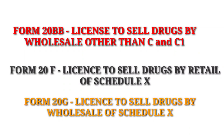Form 20G is used to issue a license to sell drugs by wholesale of Schedule X. So, Form 20F is for retail of Schedule X drugs, and Form 20G is for wholesale of Schedule X drugs. You should not get confused — practice them thoroughly because they are very similar, with just a small change between wholesale and retail.